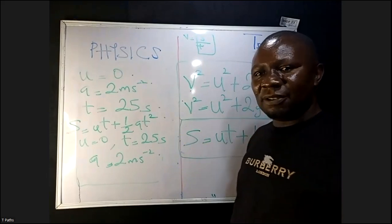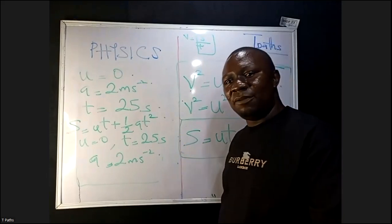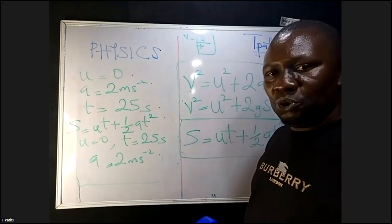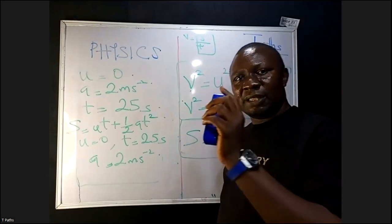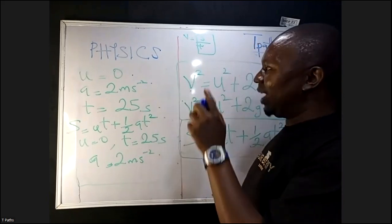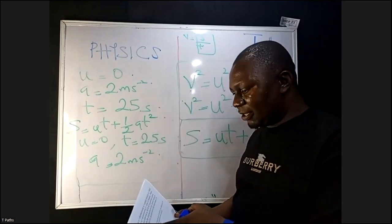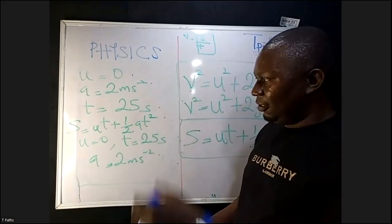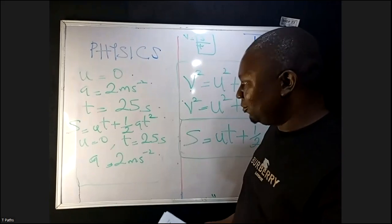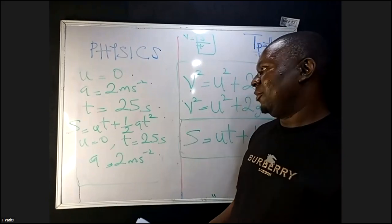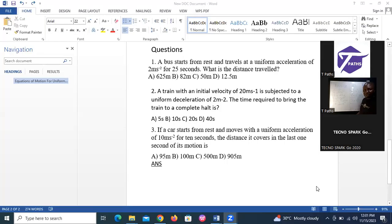From the question you'll be able to identify the parameters given. In this case U is zero because it starts from rest. They also gave you T and A. You cannot use the first or second equation of motion.